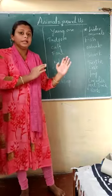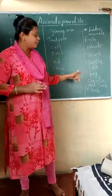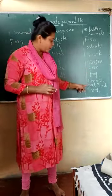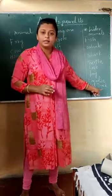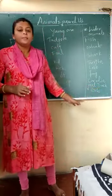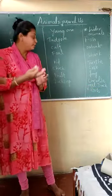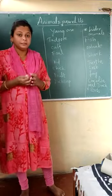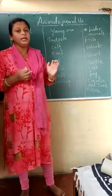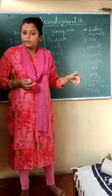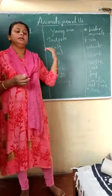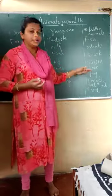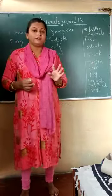These animals are called aquatic animals. Then there are also animals like turtle, crab, frog, crocodile, seal, and duck. These animals are called amphibians. Amphibians means these animals will live inside the water as well as outside the water — on the land also. They have body adaptations to live and survive in both environments.